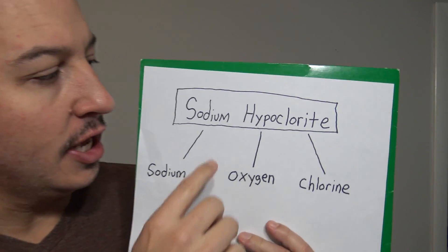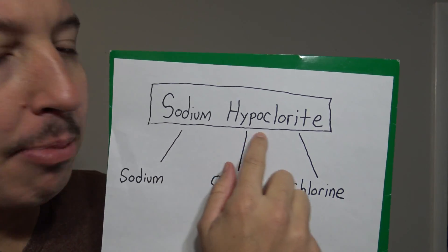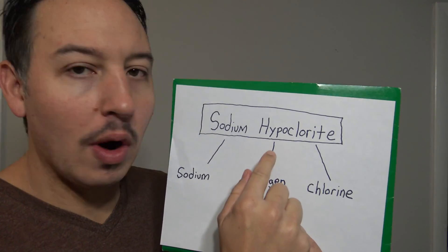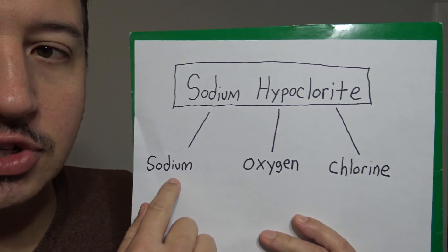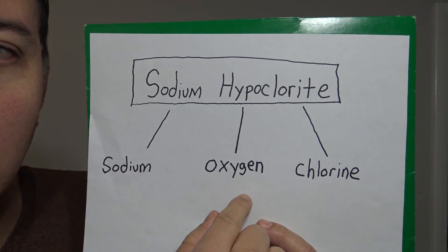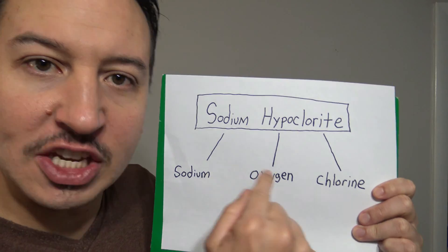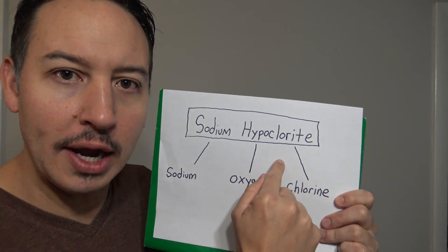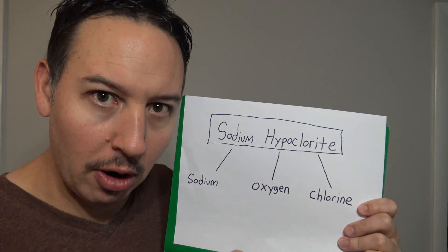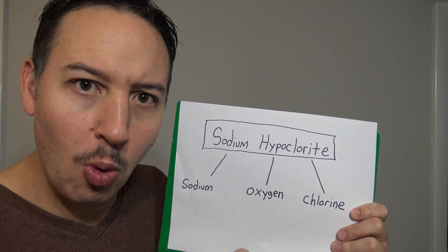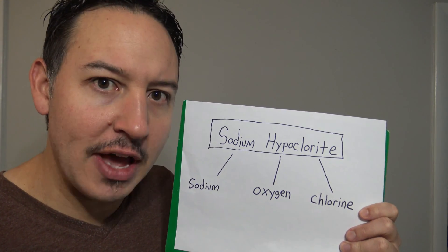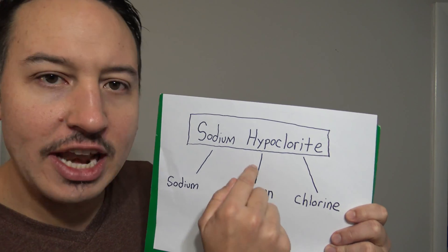The number one and first category is the active ingredients. The active ingredient in chlorine bleach is sodium hypochlorite — a chemical compound made up of sodium, oxygen, and chlorine. This ingredient, sodium hypochlorite, is what gives chlorine bleach its power to whiten your whites, remove your stains, and disinfect, which means to kill germs and bacteria.